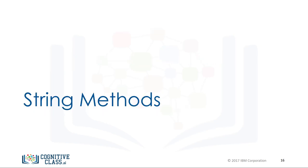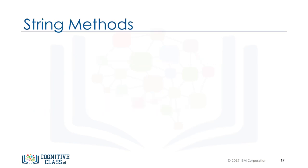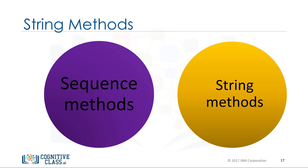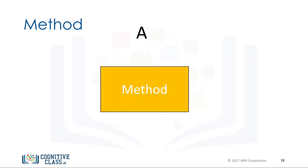Now let's take a look at string methods. Strings are sequences and, as such, have methods that apply to lists and tuples. Strings also have a second set of methods that just work on strings. When we apply a method to the string a, we get a new string b that is different from a.